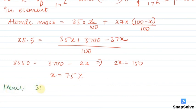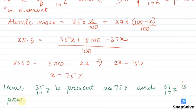Hence 35-17-Z is present as 75% and 37-17-Z is present as 25%. I hope you understood this explanation, thank you.